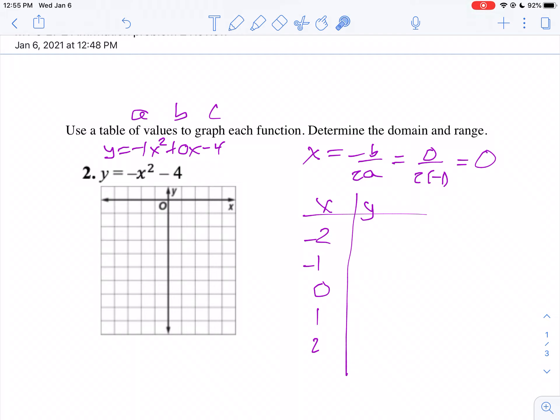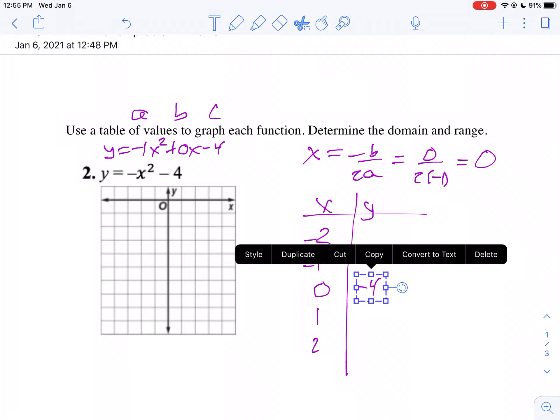Now we're going to replace x with 0. Well, if this is 0, 0 minus 4, well, that's negative 4. Oops, I put that in the wrong spot. Let me see if I can just tap. There we go.